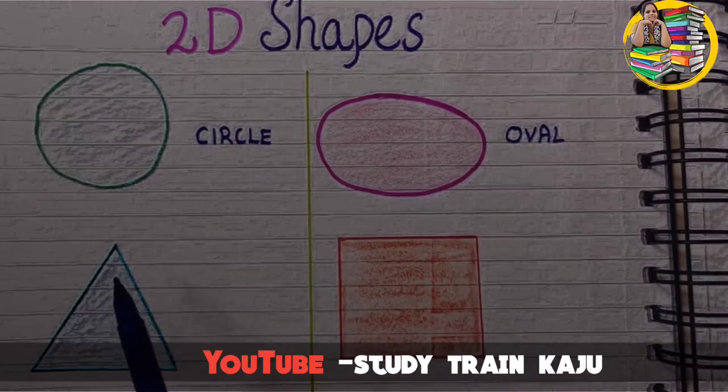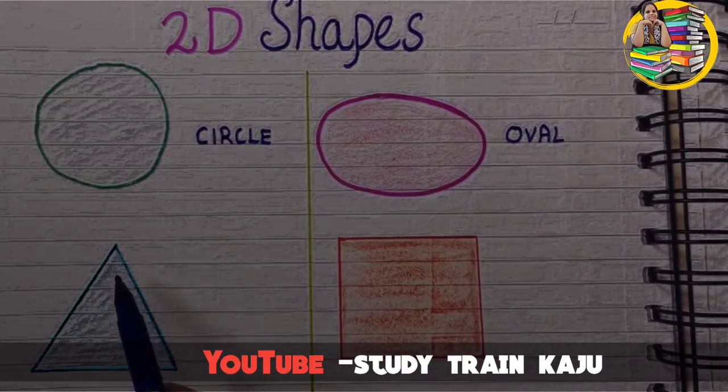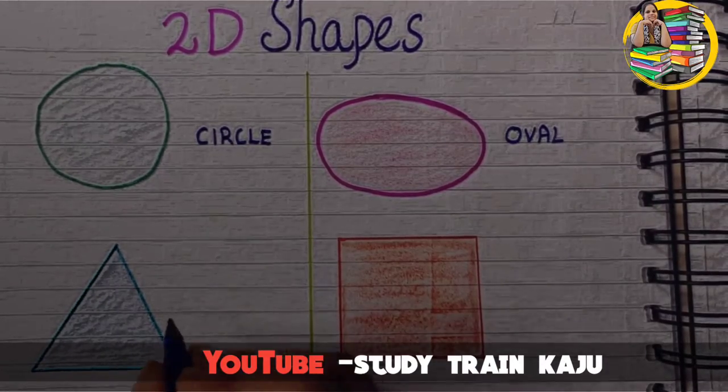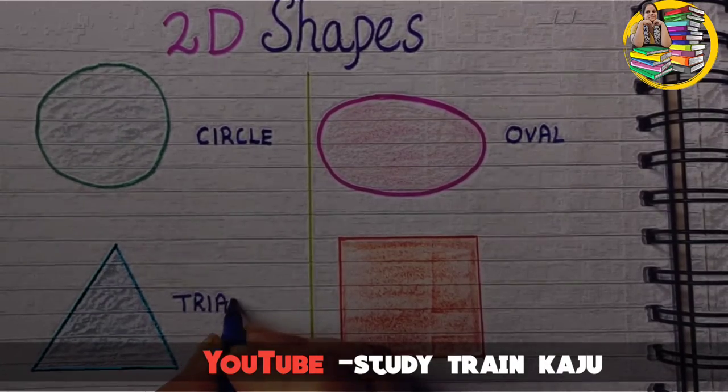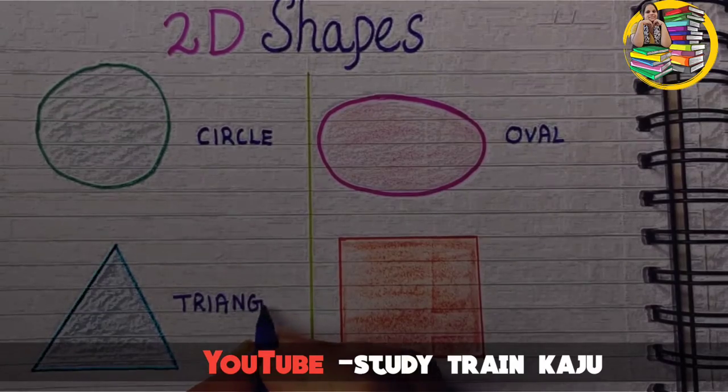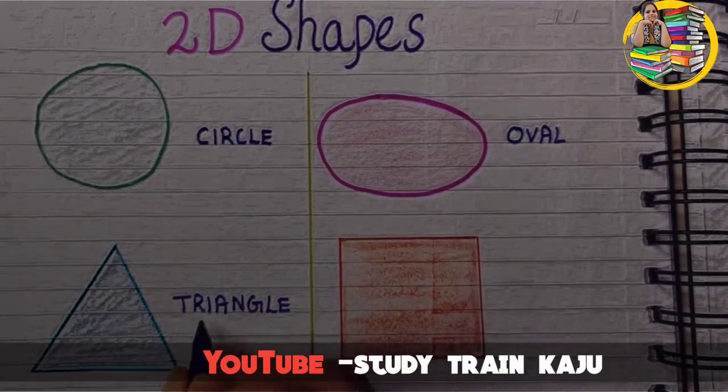The next shape has 3 sides and 3 corners. It is a triangle. T-R-I-A-N-G-L-E. Triangle.